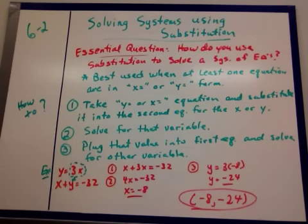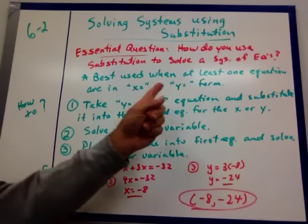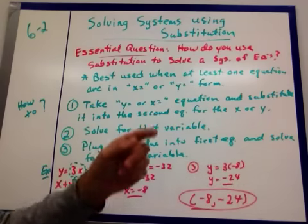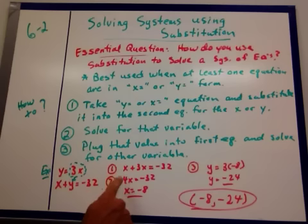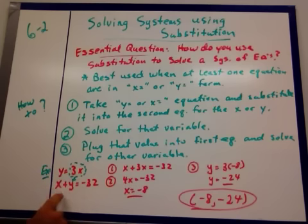And then there'll be other times it's easier to do elimination. You'll see that the next time we do this. Our question is how to use substitution to solve. It's best used when at least one of the equations is in the x equal or y equals form, like this. There we go, y equals 3x, or x plus y equals negative 32. One of the equations is in the y equal, so we'll substitute.